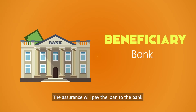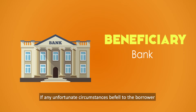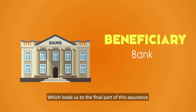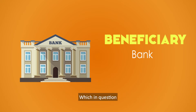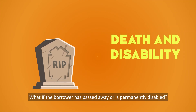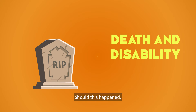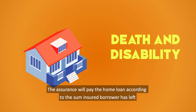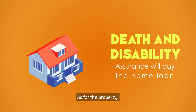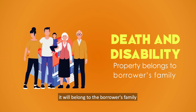The beneficiary of this assurance is the bank. The assurance will pay the loan to the bank if any unfortunate circumstance befalls the borrower. If the borrower has passed away or is permanently disabled, the assurance will pay the home loan according to the remaining sum insured, and the property will belong to the borrower's family.